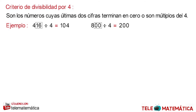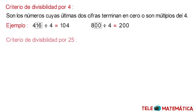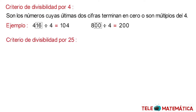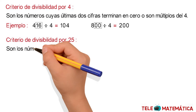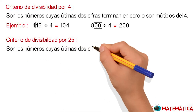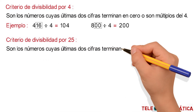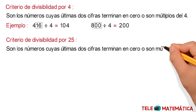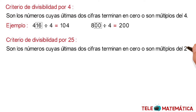In second place, we will see the divisibility criteria by 25, which is defined as: numbers whose last two digits end in 0 or are multiples of 25.